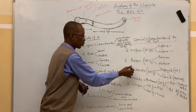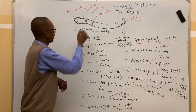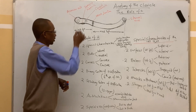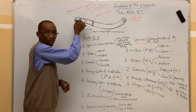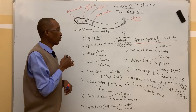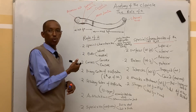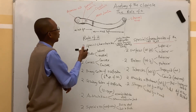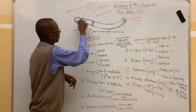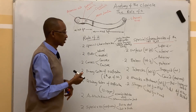The lateral one-third of the clavicle also has two tubercles. The first is the trapezoid tubercle, which lies on the anterior border of the lateral one-third. The other is the conoid tubercle, which lies at the inferior surface of the lateral one-third of the clavicle.